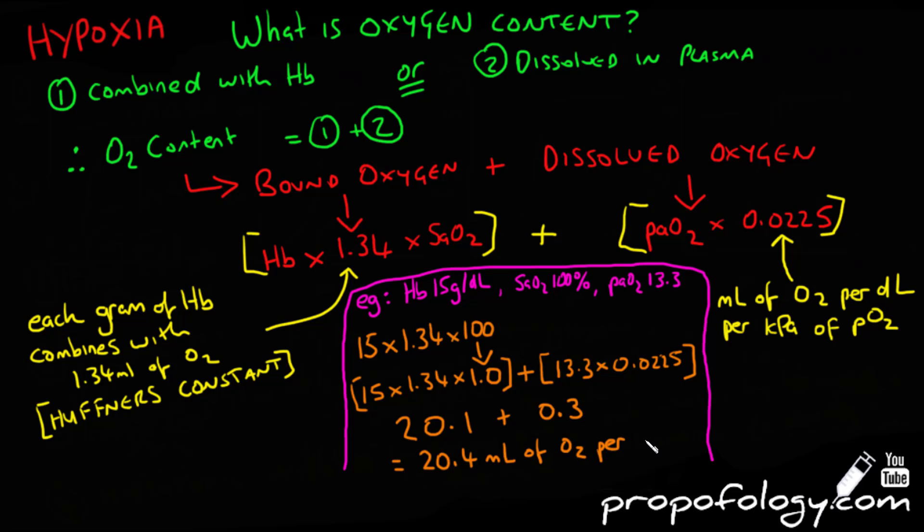And as I've already said, if you're going to take the venous saturations of oxygen, you find out that venous saturations are usually about 75%, you change that number to 0.75 and you do the equation again.